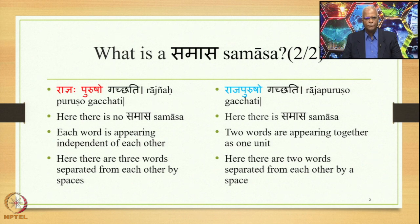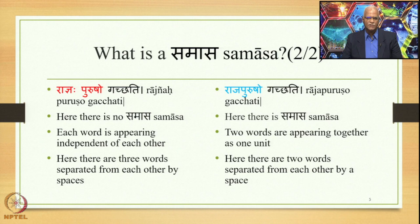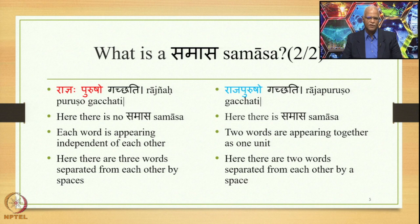In the first sentence Radnaya Purusha Gacchati there are three words; in Raja Purusha Gacchati there are two words. Two elements in the sentence got together and underwent the process of compounding, and a compound output was generated in the form of Raja Purusha. So Raja Purusha is an example of Samasa. The process that generated Raja Purusha from Radnaya Purusha is what is known as Samasa. There is quite a lot of theoretical implication and practical derivation process involved in getting Raja Purusha as an output.